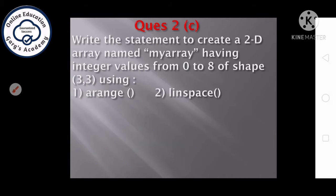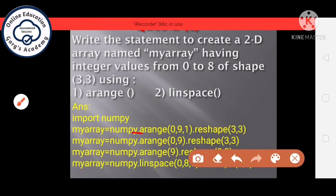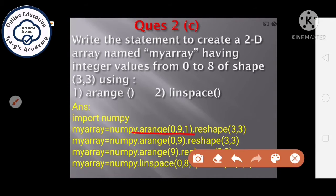Next question, write the statement to create a 2D array named myarray having integer values from 0 to 8 of shape 3,3 using arange function and using linspace function. Students, here we can use arange function in 3 possible ways. How? Let's see. First of all, we can write arange 0, 9, 1, means starting from 0, it have to go till 9, but 9th element will not be included and in steps of 1. So it will create the values from 0 to 8. After creating the array, we will reshape it into 3 rows and 3 columns using the reshape function.